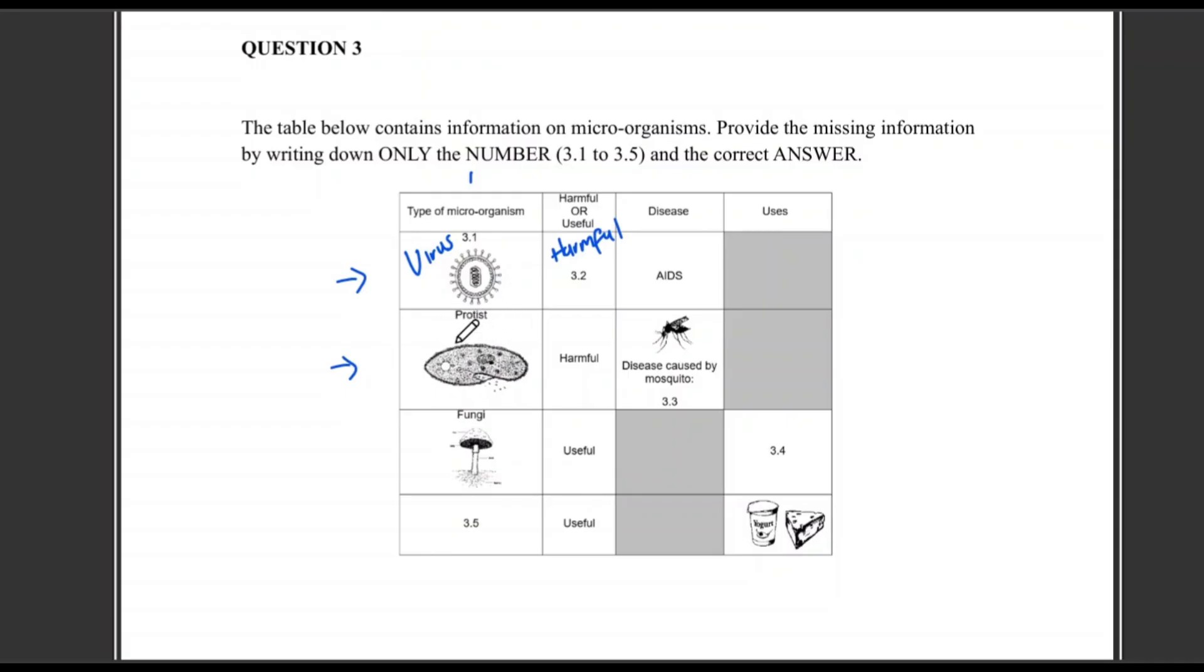Then we move to the second row. We are given a protist as a type of microorganism, and we're told it's harmful. Yes, it is. Now they are asking us to give the name of the disease that is caused by the mosquito. So the name of that disease is malaria. Then in the third row, we are talking about fungi.